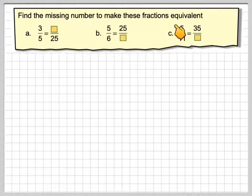Find the missing number to make these fractions equivalent. We've got 3/5 equals something over 25, 5/6 equals 25 over something, and 5/11 equals 35 over something.